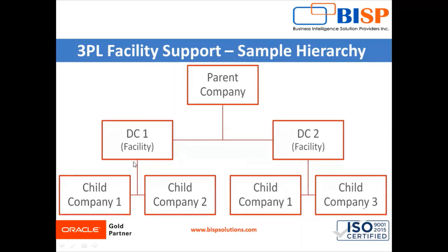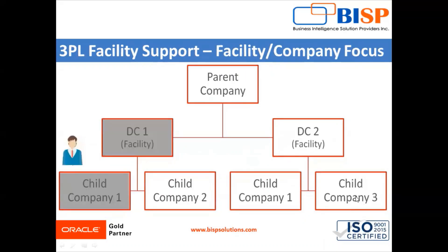Next is the third-party logistic facility support sample hierarchy. In this, the parent company — that is your business unit — can have one or more distribution centers (DC). Within those distribution centers you may have multiple child companies. For example, in distribution center one we have child company one and child company two. Company one is also working with distribution center two, which also has company three.